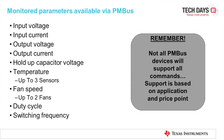There are many parameters of the power supply that can be monitored via PMBus, such as input voltage, input current, output voltage, and output current. Hold-up capacitor voltage. Temperature, up to three sensors externally. Fan speed, up to two fans. Duty cycle as well as switching frequency. Remember, not all PMBus devices will support all the commands — support is based on application and price point of the solution.